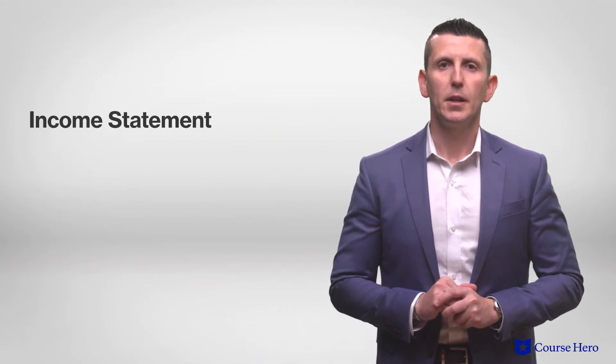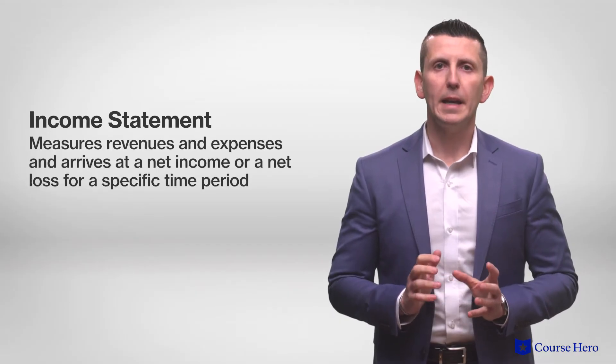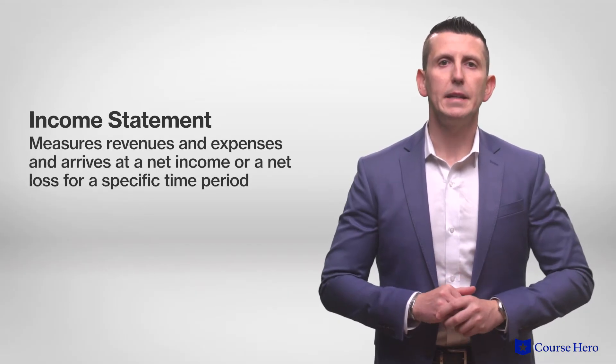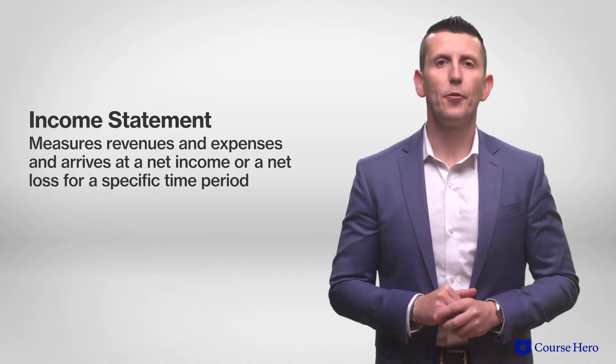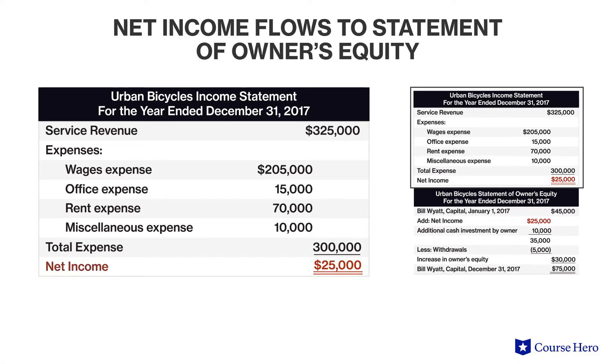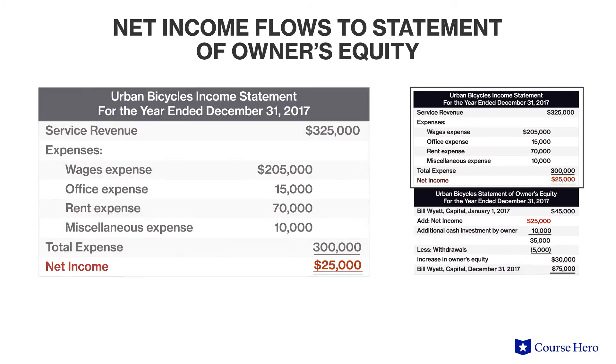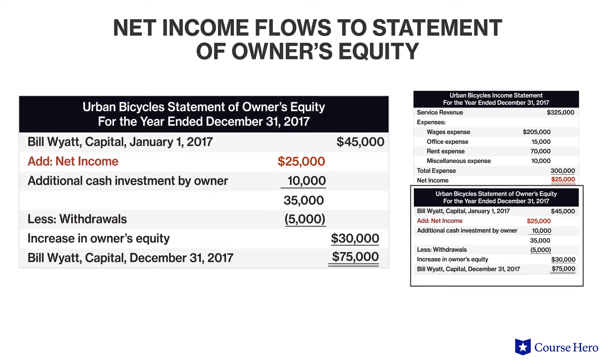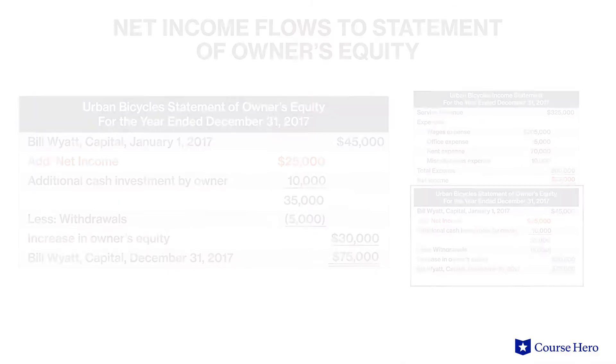These statements must be prepared in the following order, as each statement interrelates with the prior statement. The first is the income statement, which measures revenues and expenses and arrives at net income or net loss for a specific time period. Net income from the income statement flows to the statement of owner's equity. Net income or loss is very important because it explains the change in retained earnings from one accounting period to the next.